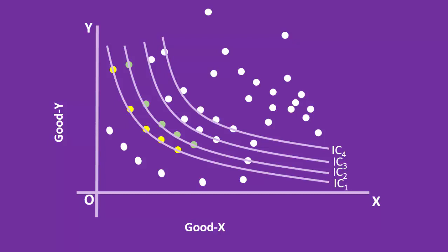What is true of IC1 and IC2 is true for every other ICs so obtained. In fact, the consumer can get as many ICs in this space. As these four indifference curves are just sufficient for our analysis, let us do away with the points.